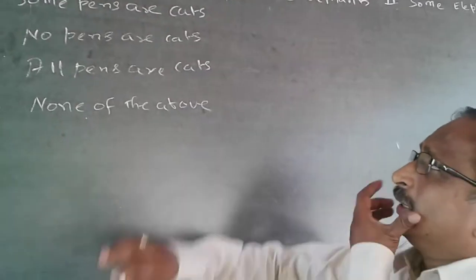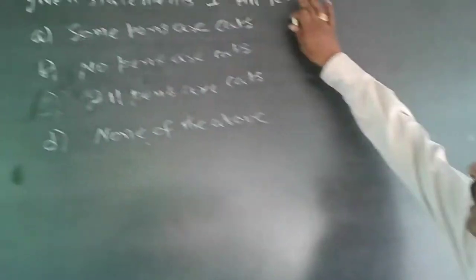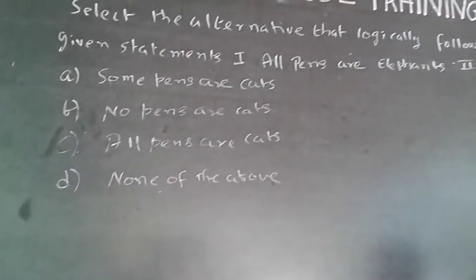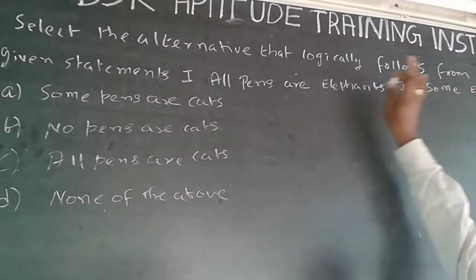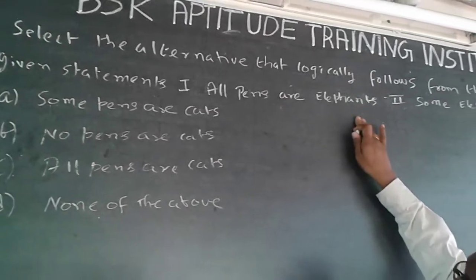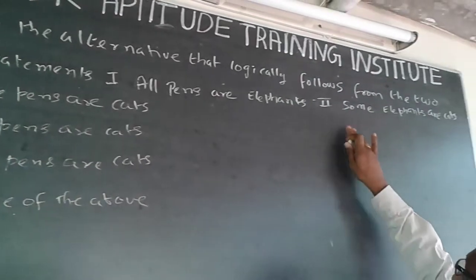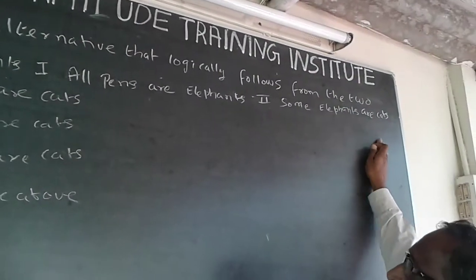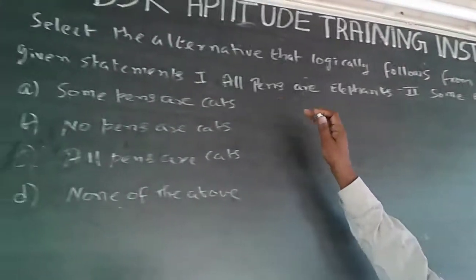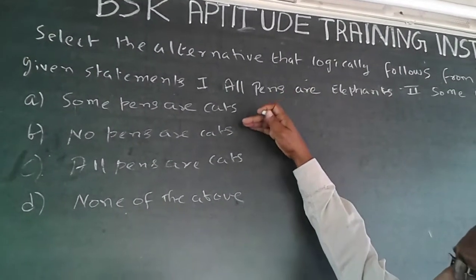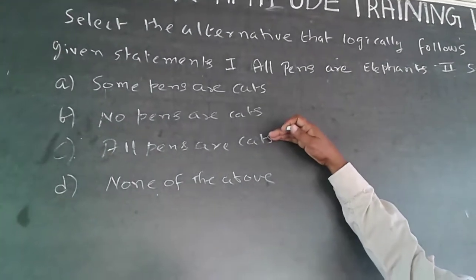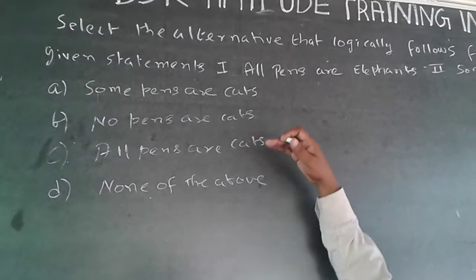The question is: select the alternative that logically follows from the two given statements. Statement one: all pens are elephants. Statement two: some elephants are cats. The options are: some pens are cats, no pens are cats, all pens are cats, and none of the above.